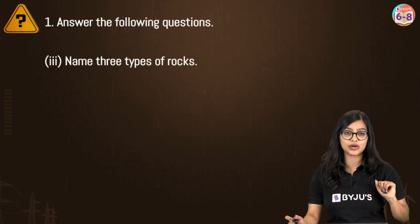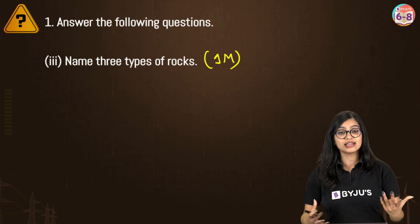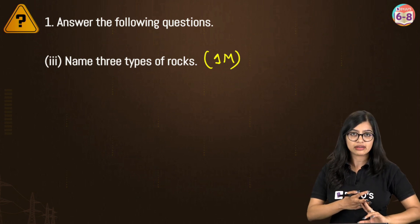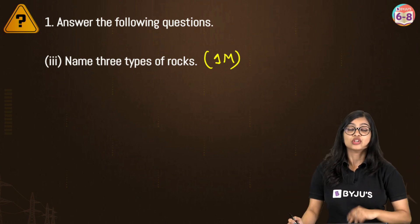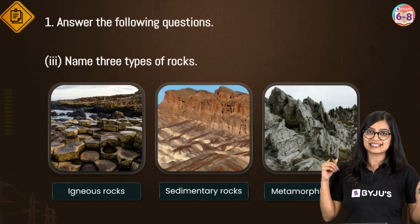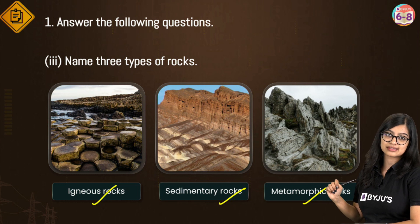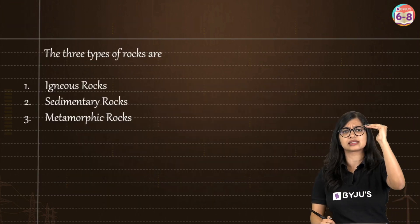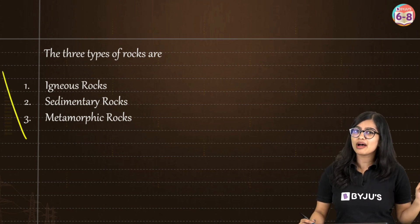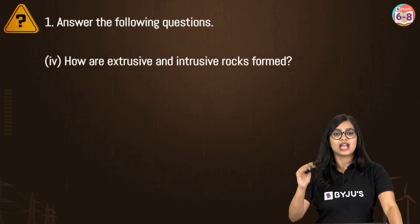The third question asks you to name the three types of rocks — not explain or elaborate, just name them. The three types of rocks are igneous rocks, sedimentary rocks, and metamorphic rocks. When asked to just name them, list them one after the other in point format and you will get your marks. Presenting your answer correctly is very important when writing for two or three marks.